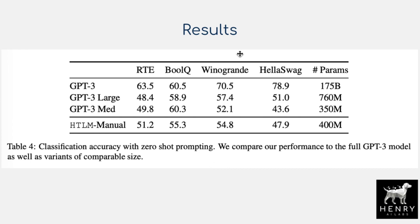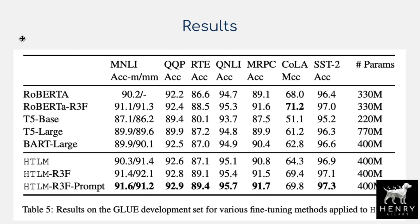These are results generally showing the effectiveness of the representation when fine-tuned for the GLUE benchmark. The 3F modification to fine-tuning shows a significant advantage, at least on MNLI natural language inference tasks, and also on reading comprehension and other tasks. This draws from another paper on fine-tuning language models, preventing representation collapse in transfer learning.